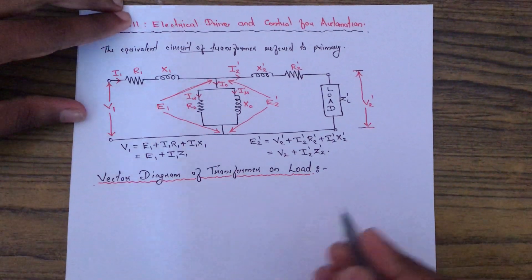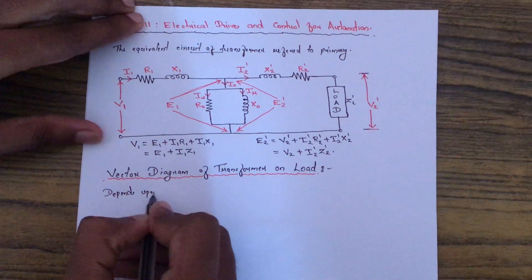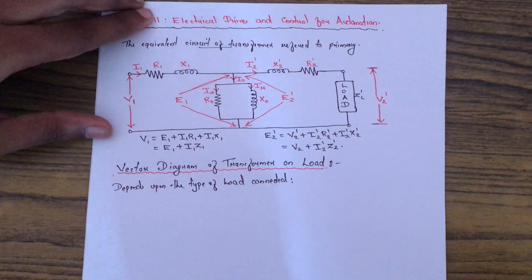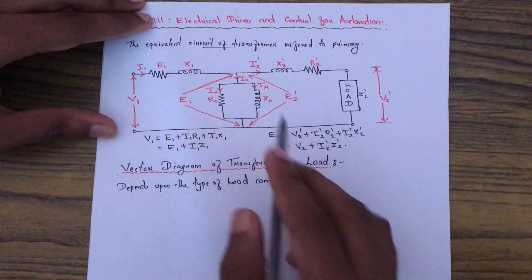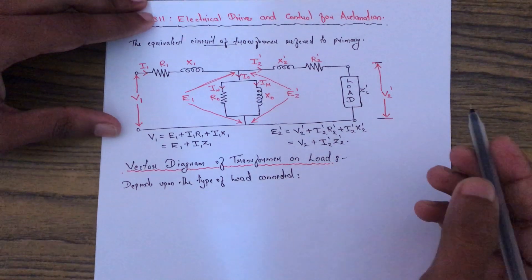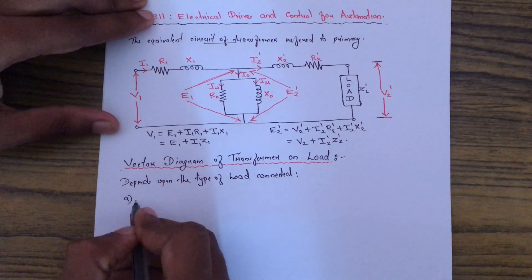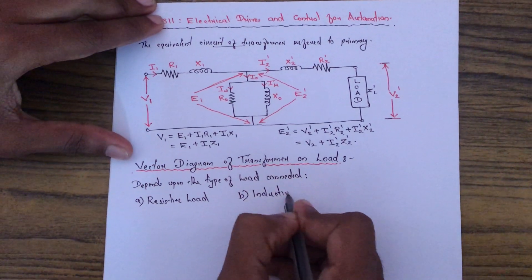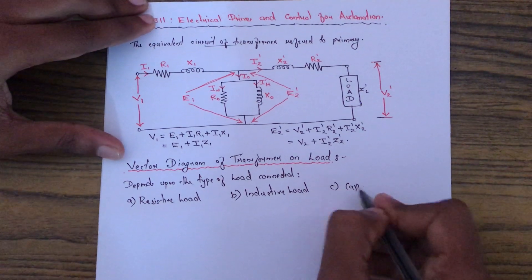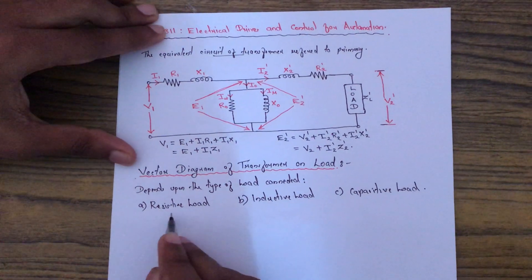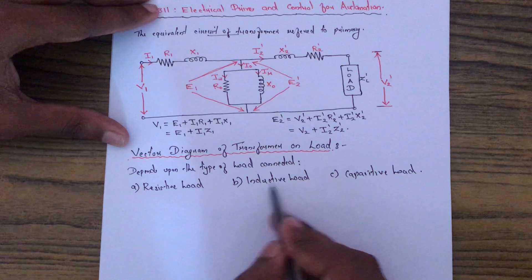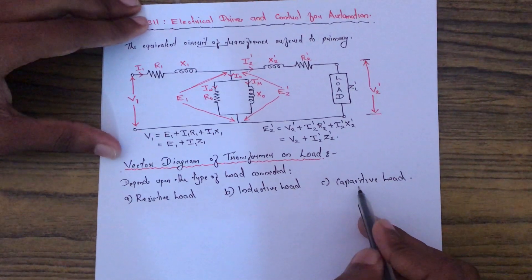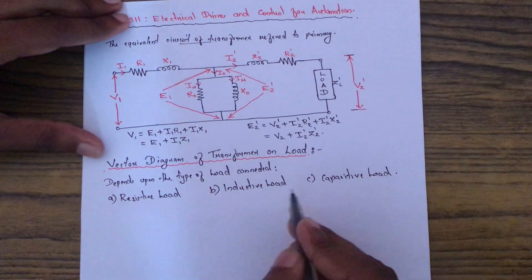The vector diagram of a transformer on load depends upon the type of load connected. Since the transformer is an AC machine, there are three types of loads in AC: resistive load, inductive load, and capacitive load. For example, for resistive load we can say heaters; for inductive load, single phase induction motors like fans or centrifugal pumps; for capacitive load, capacitors or AC ballast.